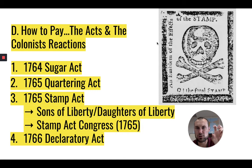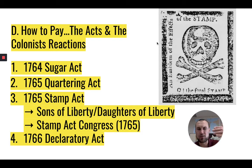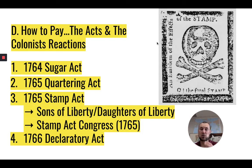These radicals basically enforced non-importation agreements that came about because of the Stamp Act Congress. They tarred and feathered British government officials and ransacked government officials' homes. A more moderate protest was seen with the Stamp Act Congress in 1765, where 27 delegates from nine of the 13 colonies came together and gave their grievances to the king, which were largely ignored. But the significance is that it brought colonial leaders together — it was going to lead to the Continental Congresses. What we do get out of this is the non-importation agreements: we are not going to import or buy British goods; we're going to start making those ourselves and boycott. This really hurt Britain economically.